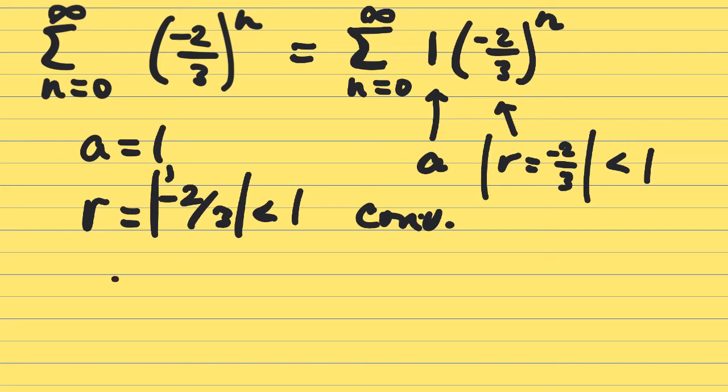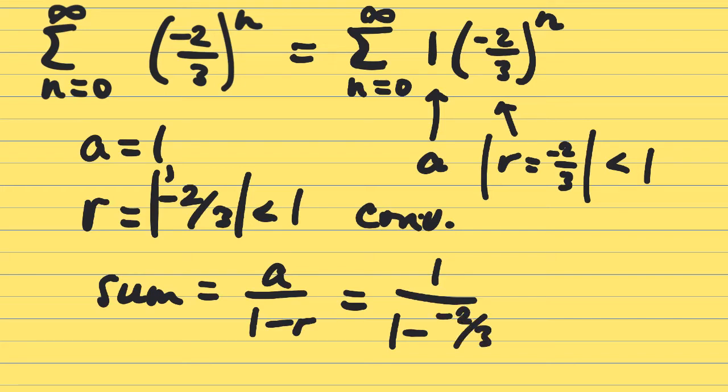So, we have a convergent geometric series where A is equal to one and R is equal to negative two thirds. We can go ahead and say it converges. Because the sum is going to be one over one minus negative two thirds, which is one over five thirds, equals three fifths. So, if you were to add up all the terms, infinitely many, that series at the top left would have a finite sum of three fifths.